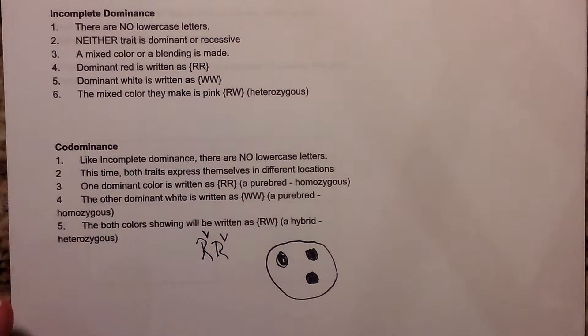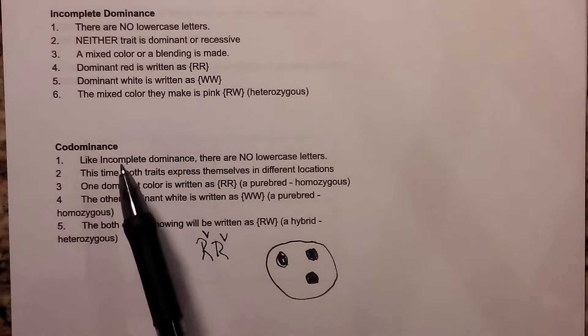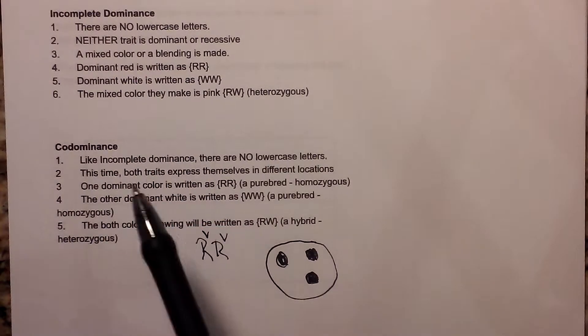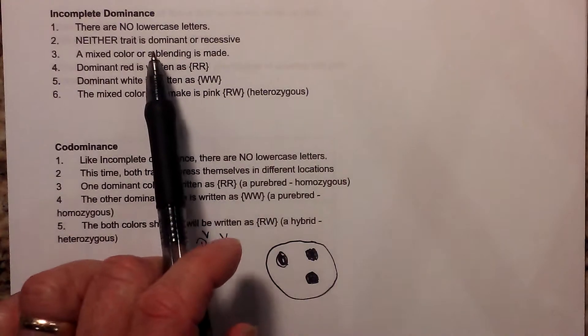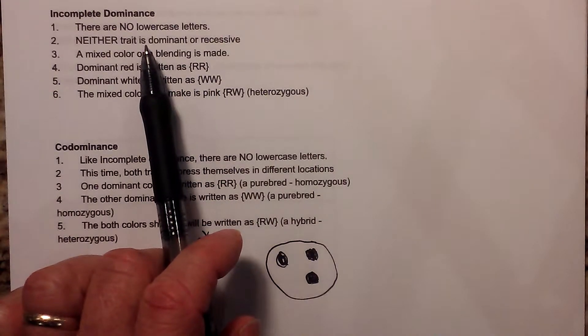In this video I'd like to talk about setting up a Punnett square for incomplete dominance and codominance. In incomplete dominance there are no lowercase letters. Neither trait is dominant or recessive.